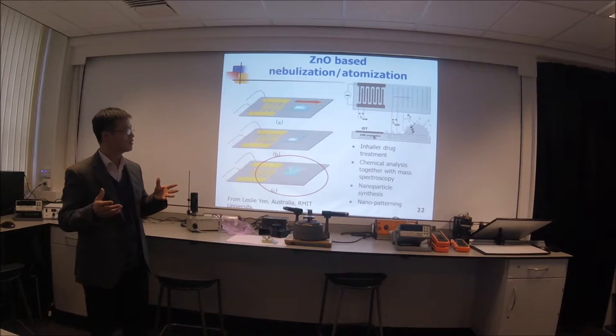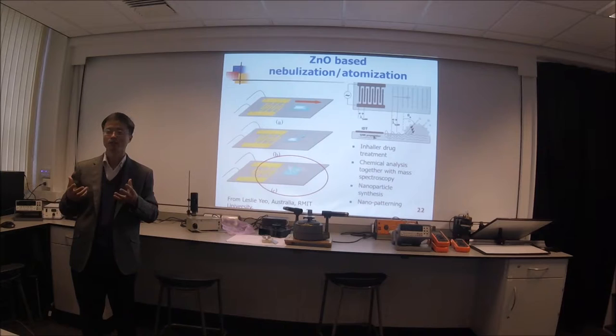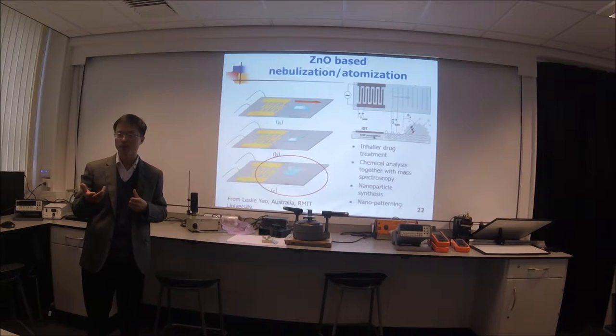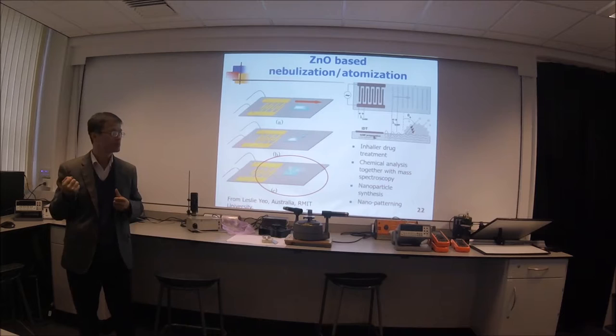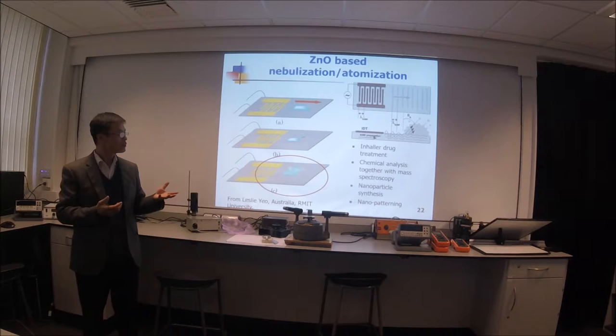Another interesting thing we can do is break the liquid up into very, very small droplets — we normally call it a mist or fog. The liquid becomes so small it becomes vapor type. We normally call this nebulization or atomization. This is very interesting work with a lot of applications.